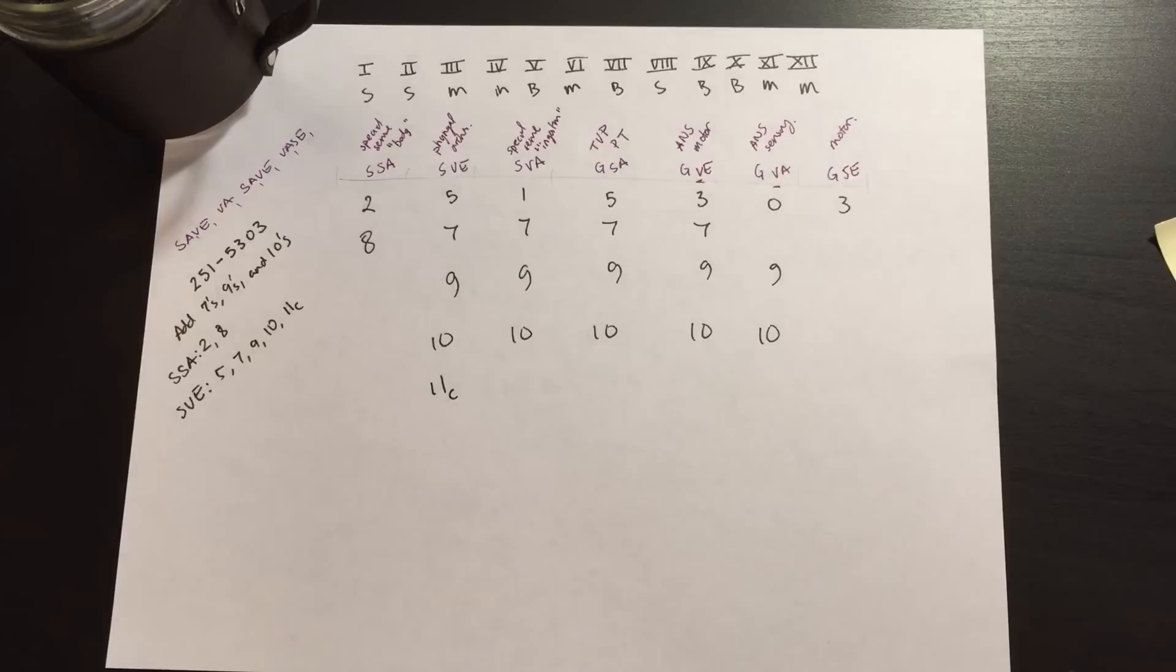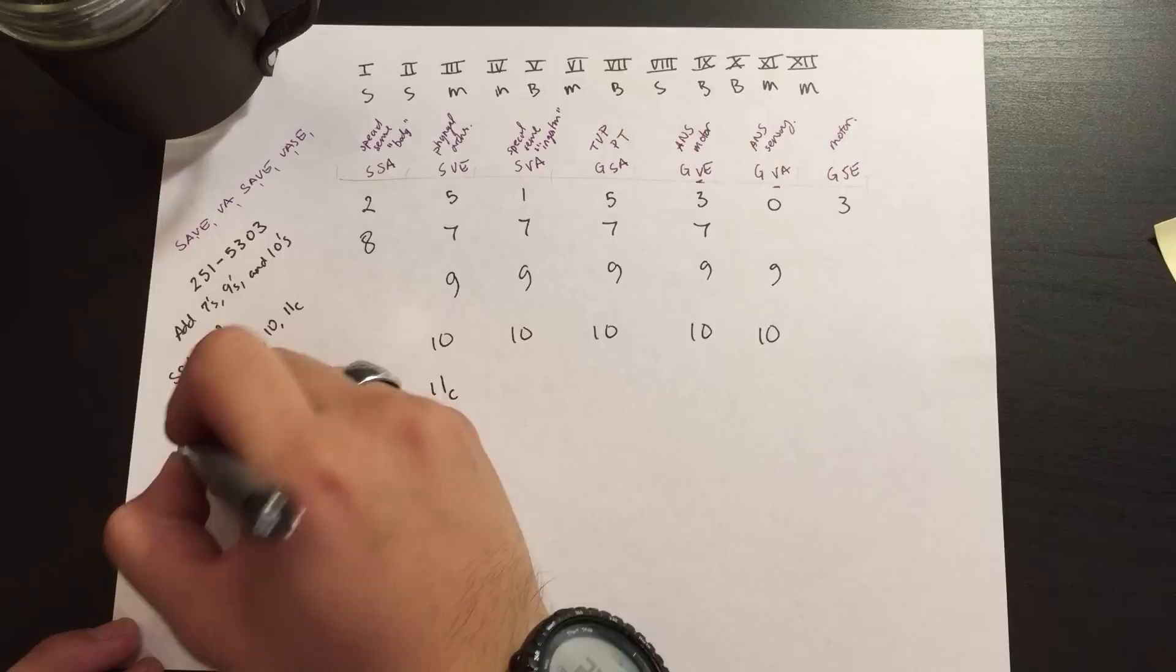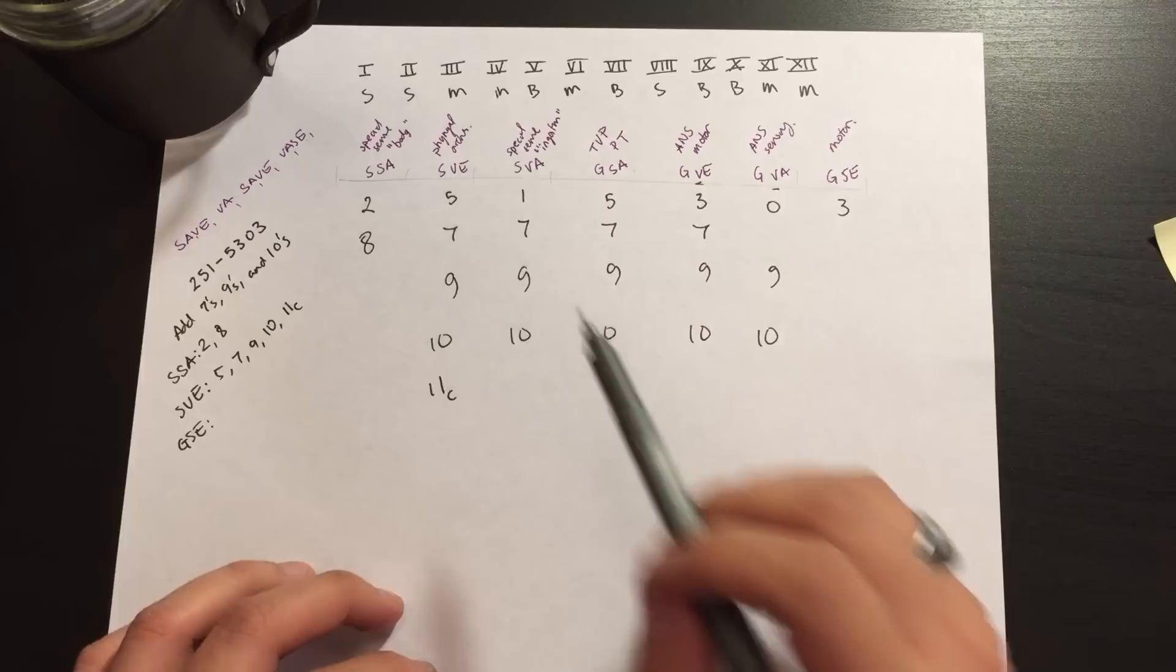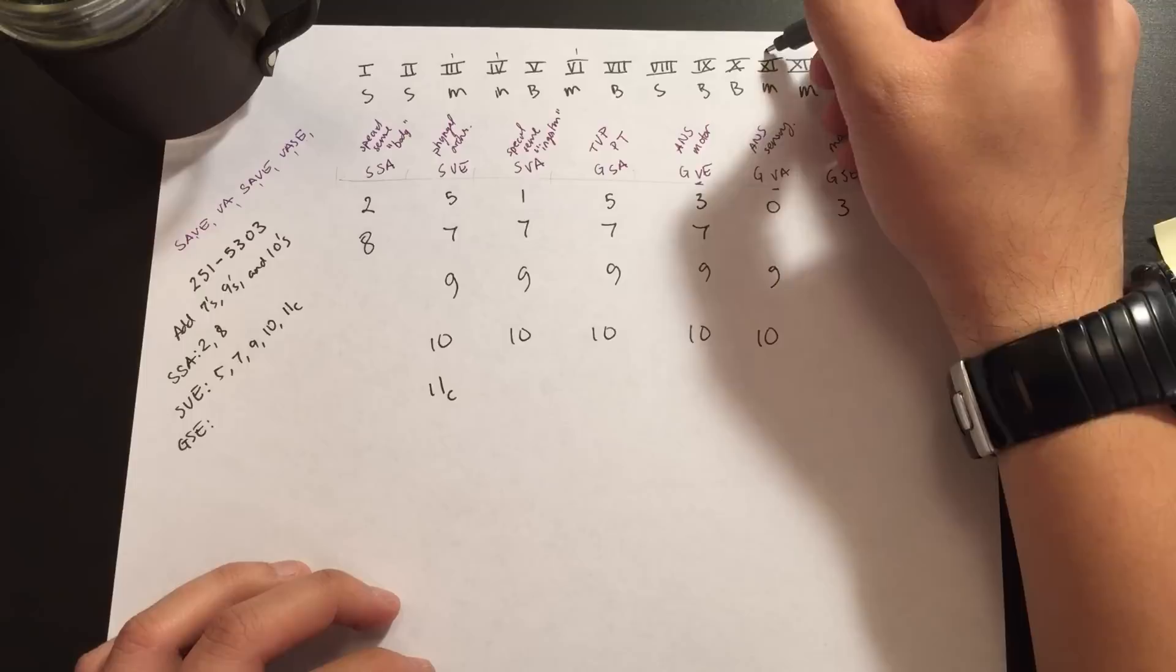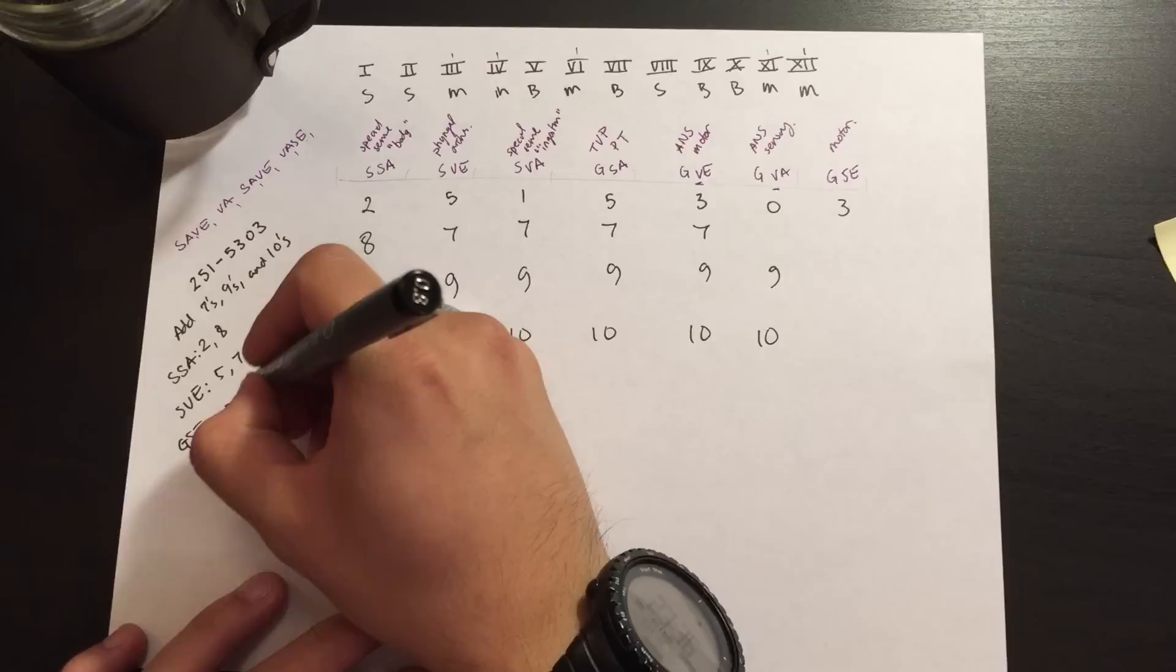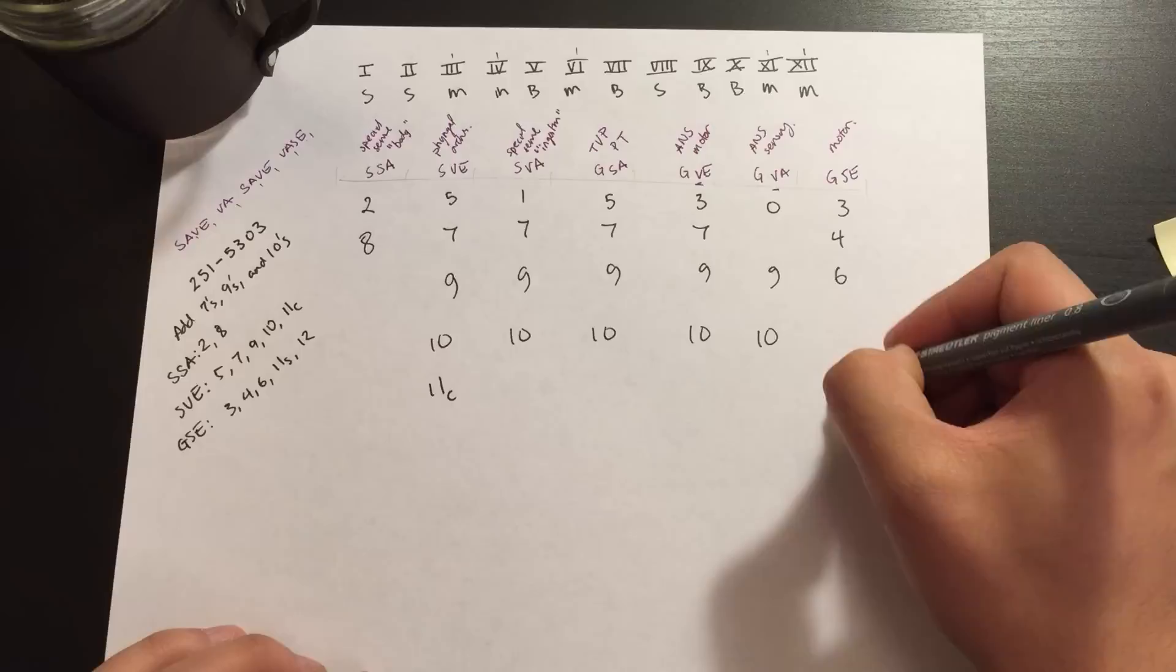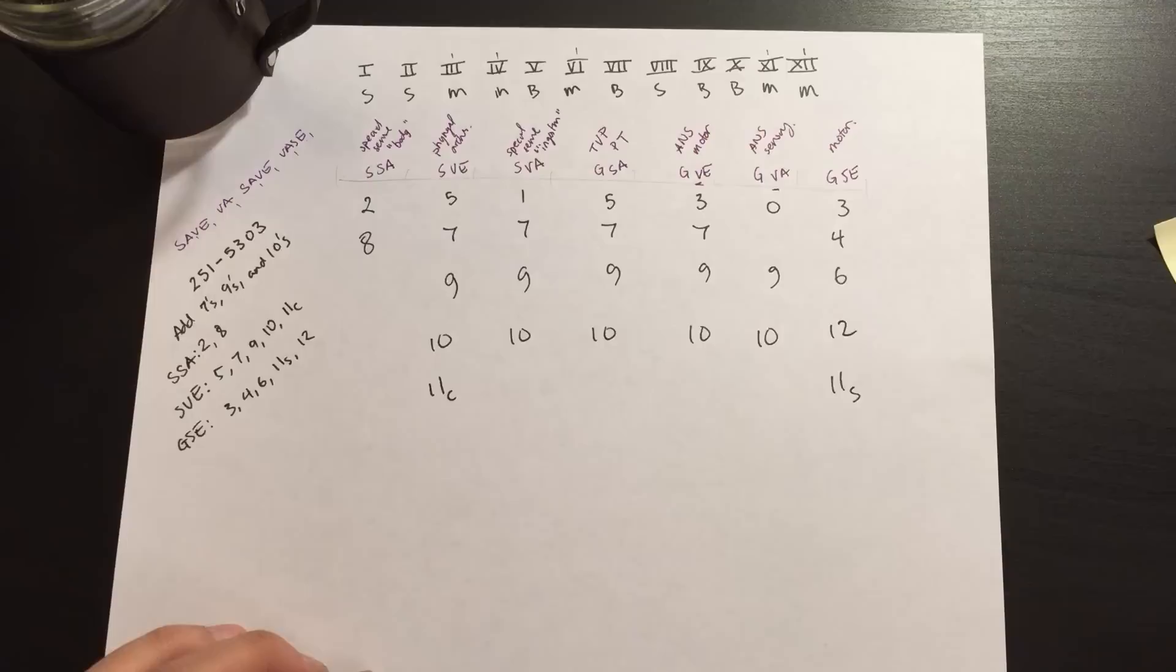And then the last part to finish off this whole chart is our general somatic efferent fibers, GSE. And if you go back up to our original mnemonic with the motor and our sensory, all the motor components, so that's 3, 4, 6, 11, and 12. Six, 11 and 12. Eleven is the spinal component that forms up the remainder of the GSE. So 3, 4, 6, 11 spinal component, and 12.